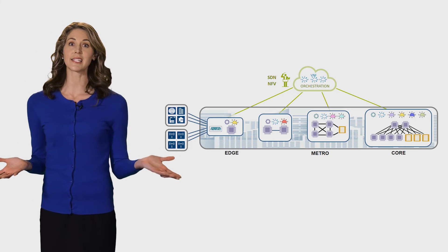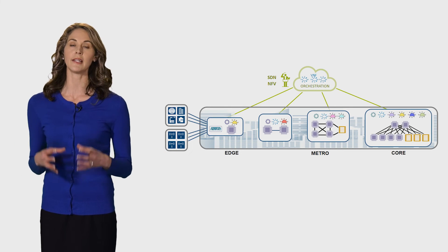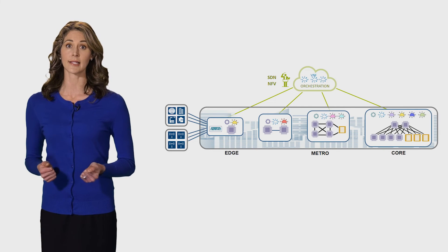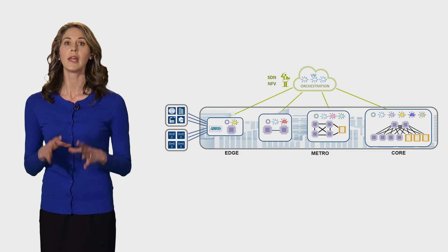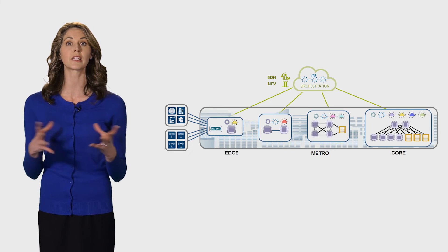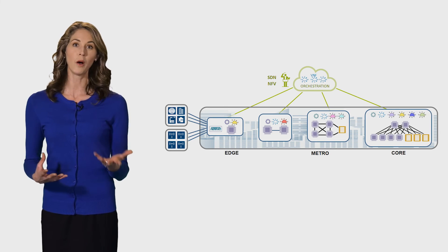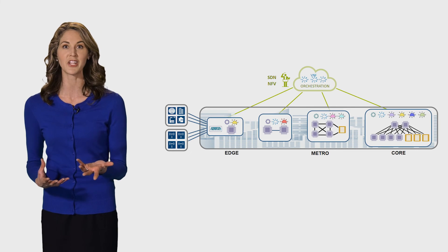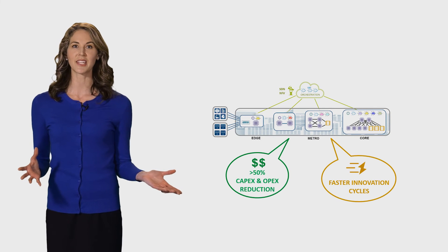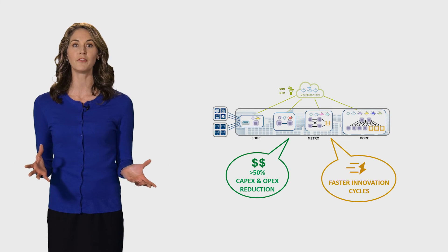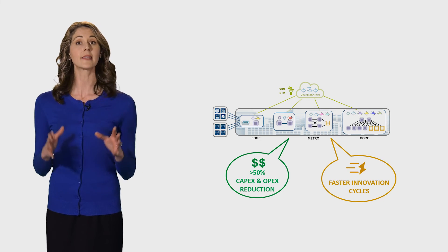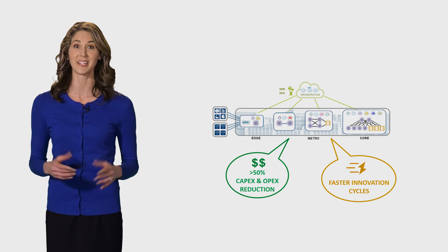Putting all the pieces together results in a truly differentiated and disruptive end-to-end network that enables service providers to convert traditional assets such as POPs and COs into more flexible service-oriented data centers, and for data center operators to expand into inter-facility networking while maintaining the flexibility and innovation speeds of intra-data center solutions. Overall, the Coriant HCA approach provides network savings of greater than 50% compared to traditional approaches and significantly accelerates networking and service innovation.